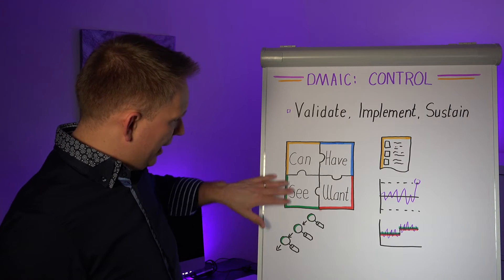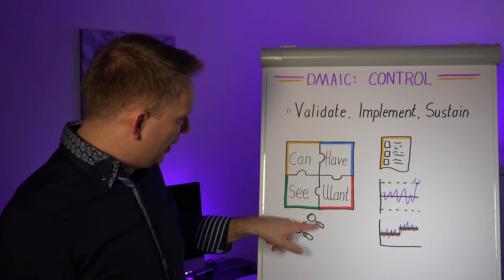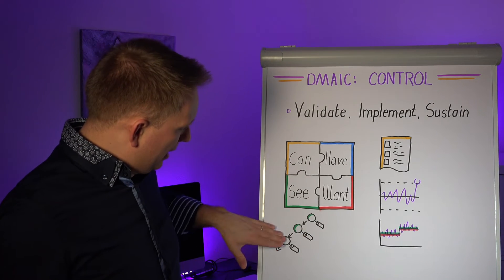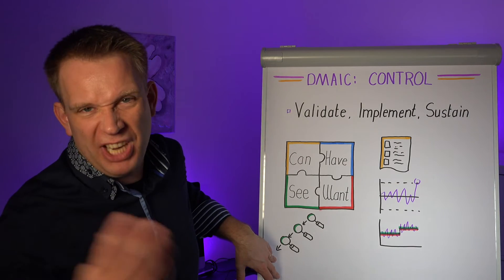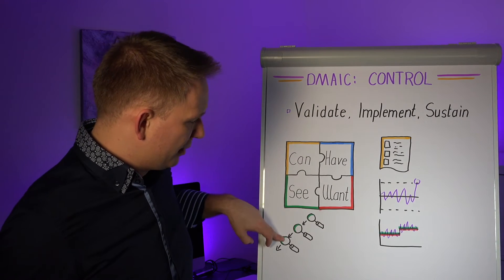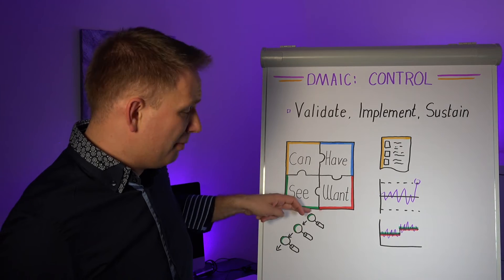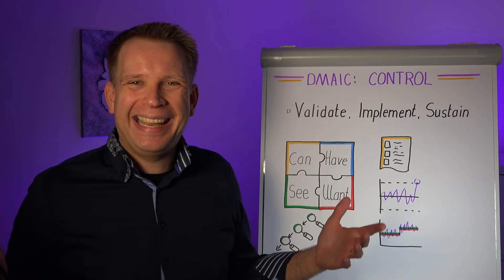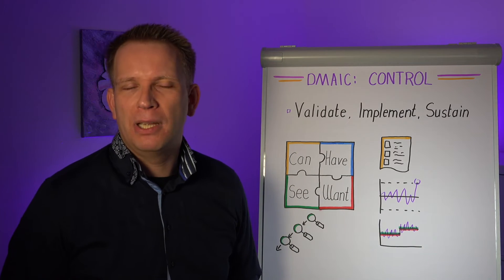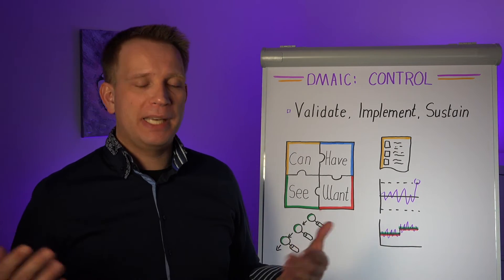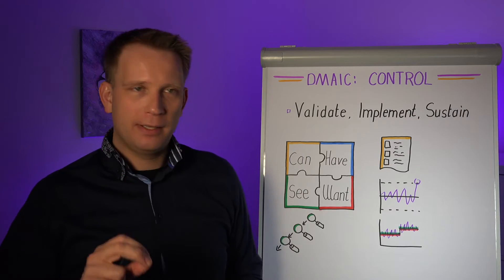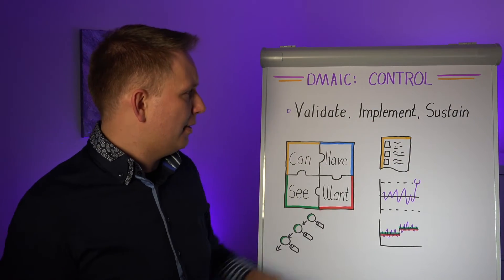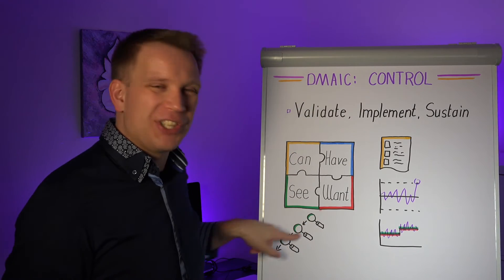You also want to have, more in the controlling and feedback, you want to have that layered process audit or process confirmation where the person themselves checks their own work with a checklist. But then their supervisor also checks them, spot checks them from time to time. But also, the GM, the plant manager, whoever, any person in management or in a good expert role, they also need to get to the floor from time to time to check on are we now doing things in the new way? So is it implemented? And this really sustains that.